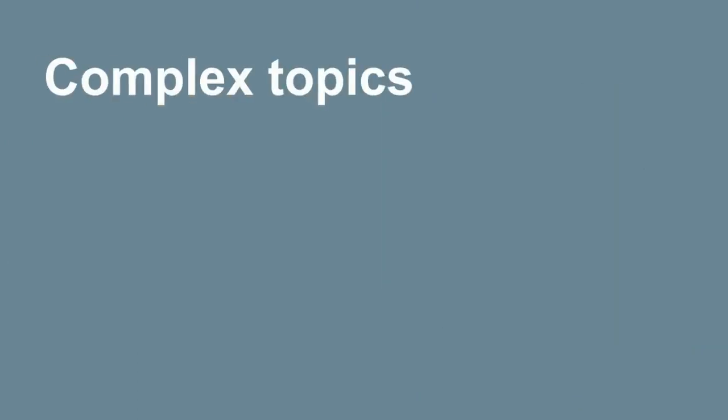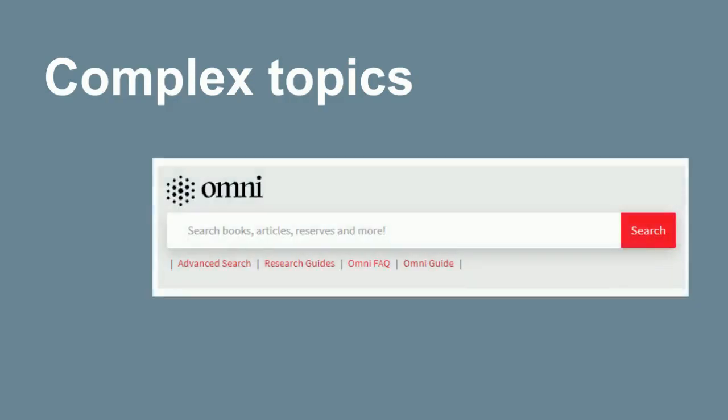Complex topics draw together several distinct elements — in other words, multiple concepts. When you search for this kind of complex topic, you are conducting an advanced keyword search. Unlike an author or title search, an advanced keyword search is an exploration into the unknown — you won't know what you will find until you start searching.